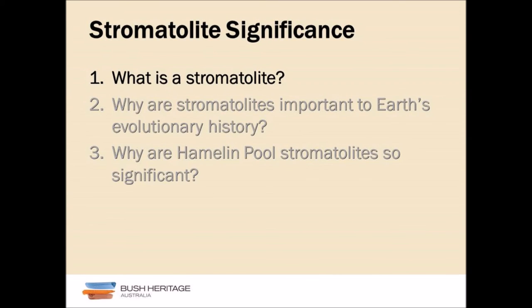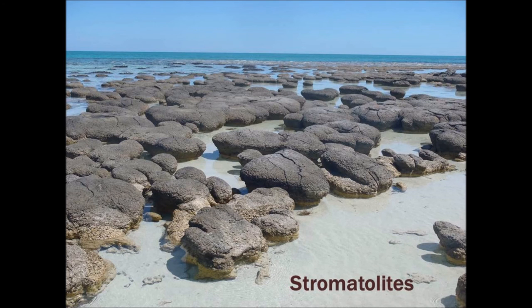The technical definition for a stromatolite is an organo-sedimentary deposit that accretes by the trapping and binding of microorganisms, or the precipitation of calcium carbonate through metabolic processes. So how does a stromatolite accrete?